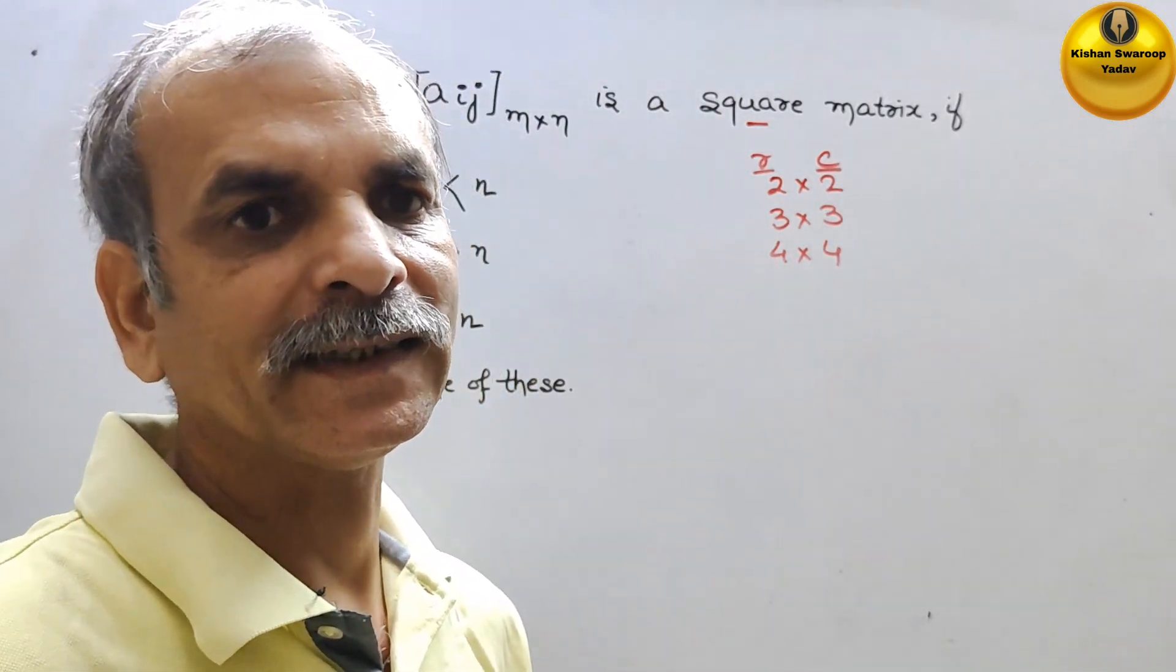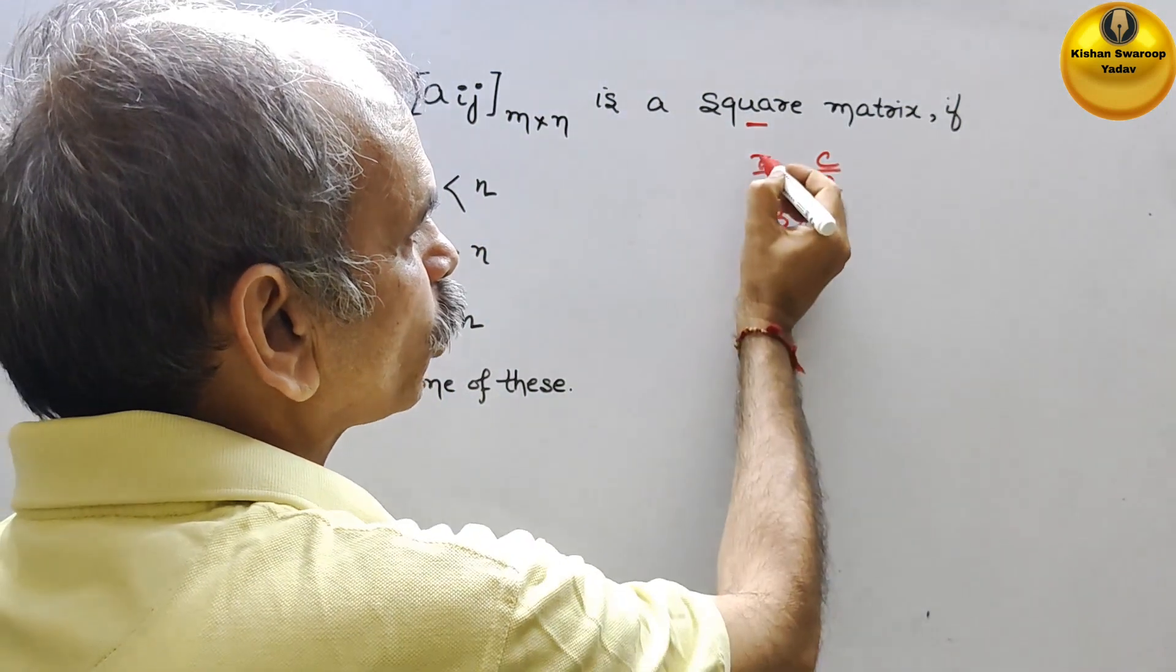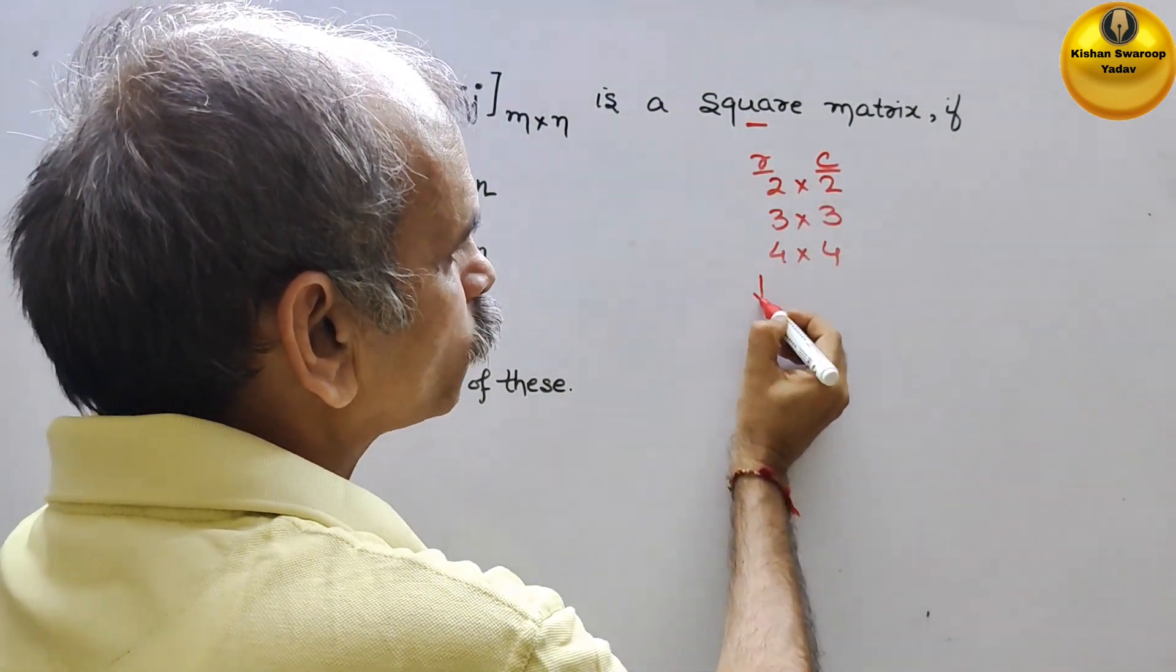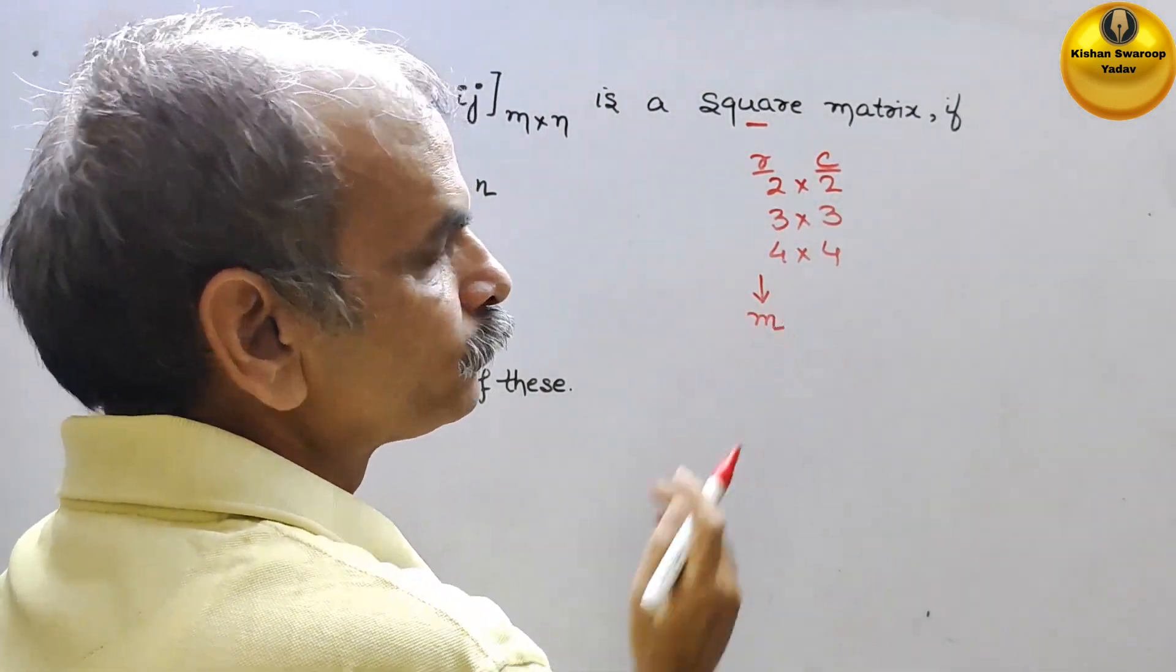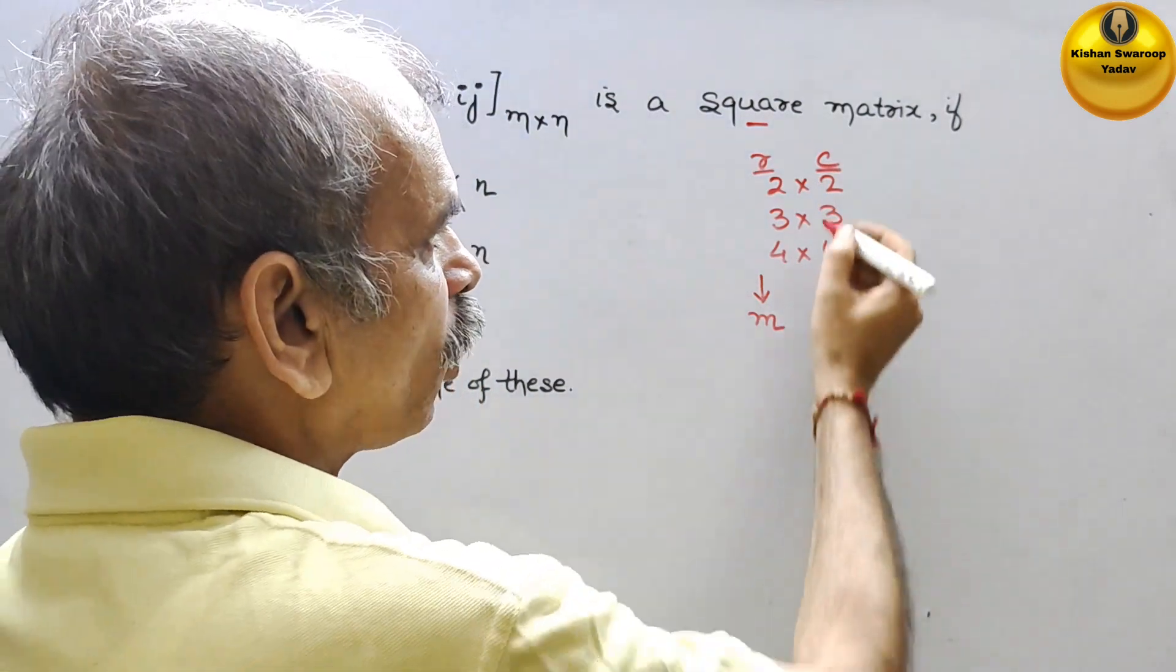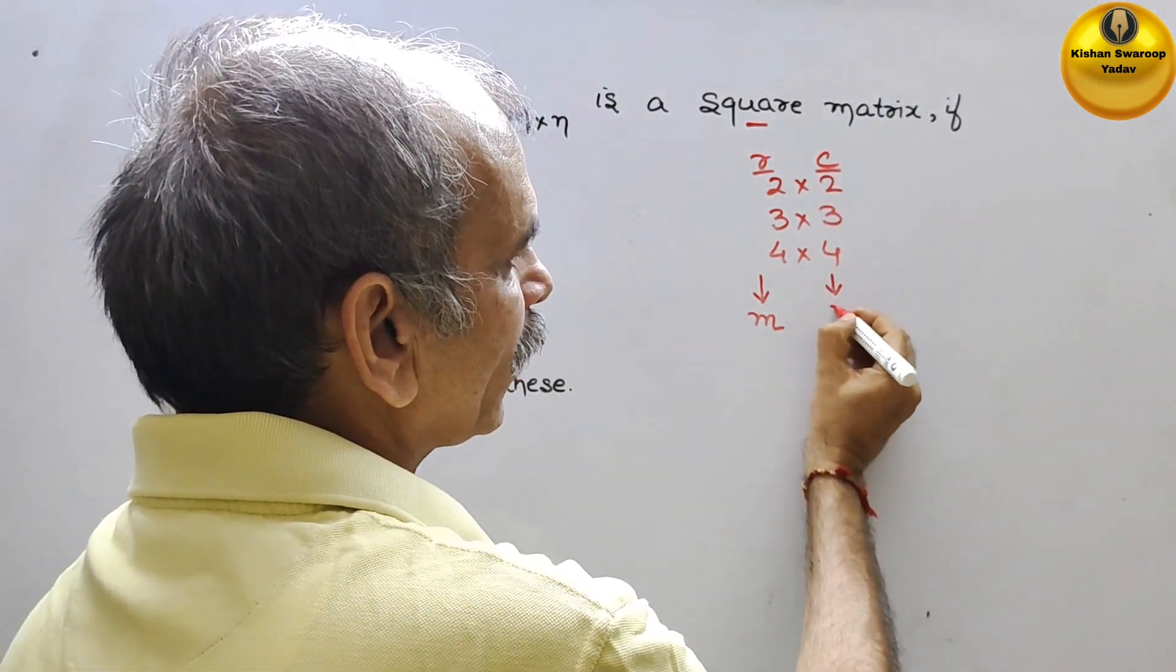Likewise, it should be there. That means this row will belong to your m, and the column will belong to your n.